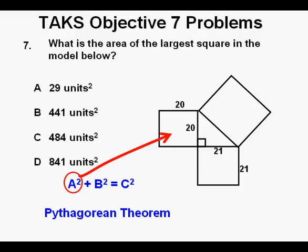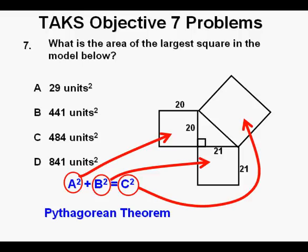the area of this square, which we'll call A squared, plus the area of this square, which we'll call B squared, equals the area of this largest square across the diagonal between the two smaller squares, which we'll call C squared.